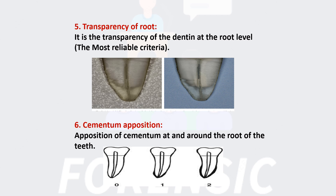The sixth criterion is Cementum Apposition. Cementum is a specialized calcified substance covering the root of the tooth. We can relate this accumulation with the image.